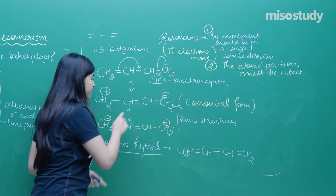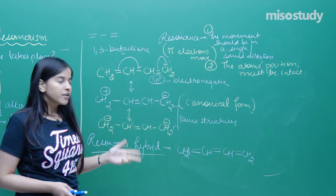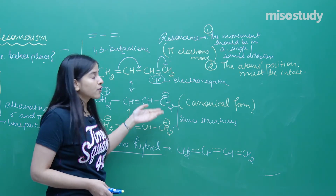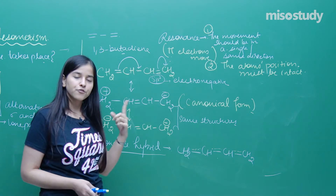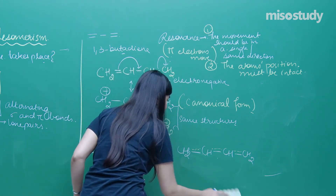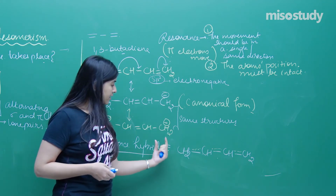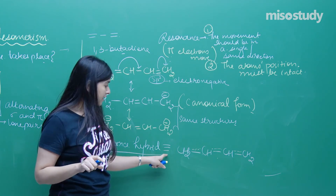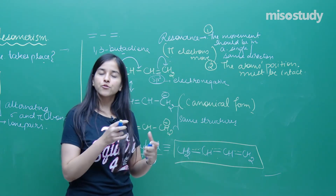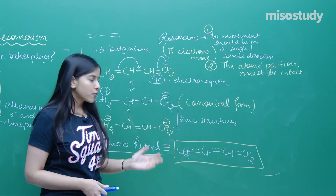Now about the arrows — the double-headed arrow means the two forms can interconvert into each other. Whenever representing resonance structures or canonical forms, use the double-headed arrow. When representing the resonance hybrid, use an equivalent sign — three dashes together. So that is how resonance happens, with a driving force moving electrons continuously in one direction.